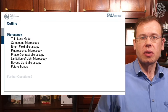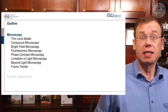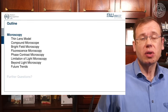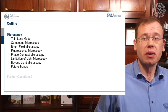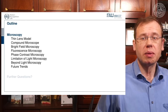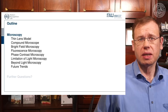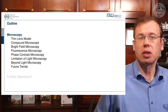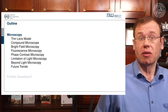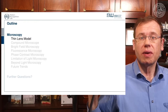This is the outline of today's talk. We will first have a look at the thin lens model, followed by the compound microscope. Then we want to talk about contrast mechanisms — covered in the next video — ranging from bright field microscopy to fluorescence mechanisms and phase contrast. We also want to discuss the limitations of microscopy: how far can we actually go in terms of resolution, and where are the limits?